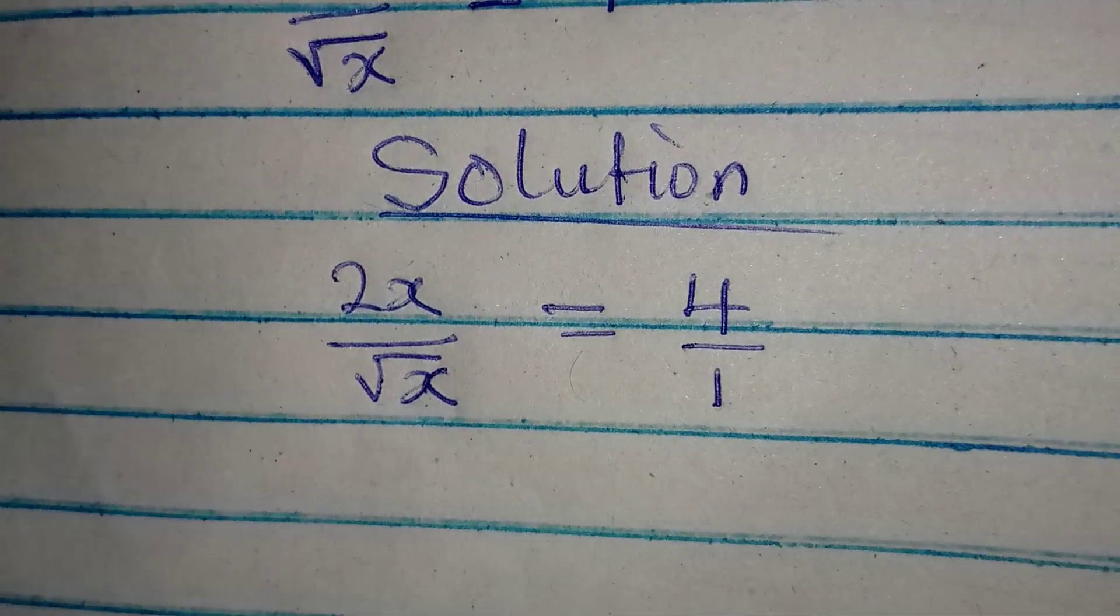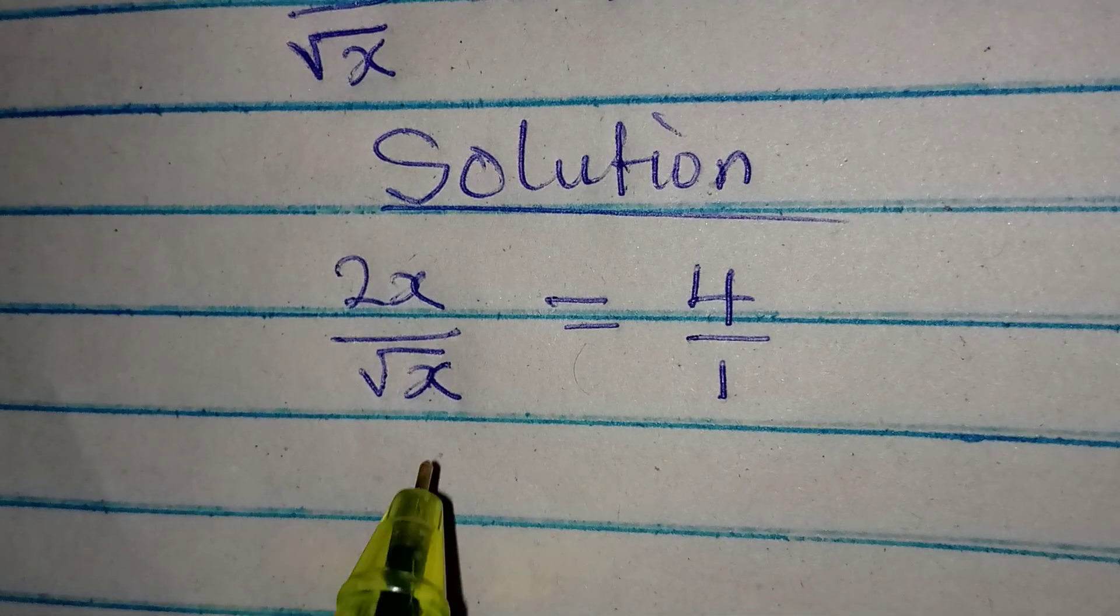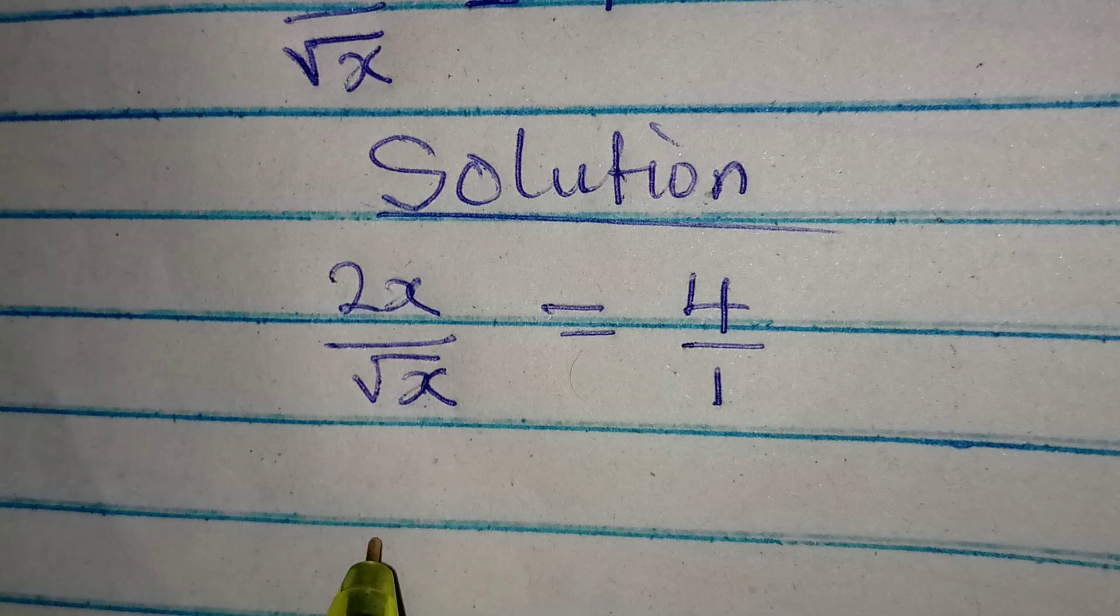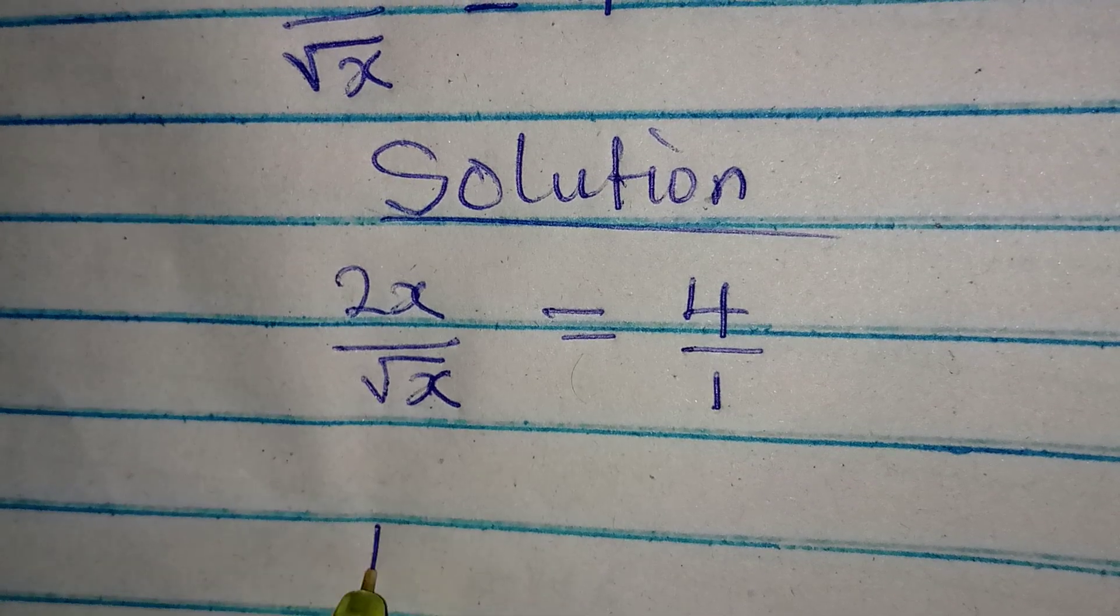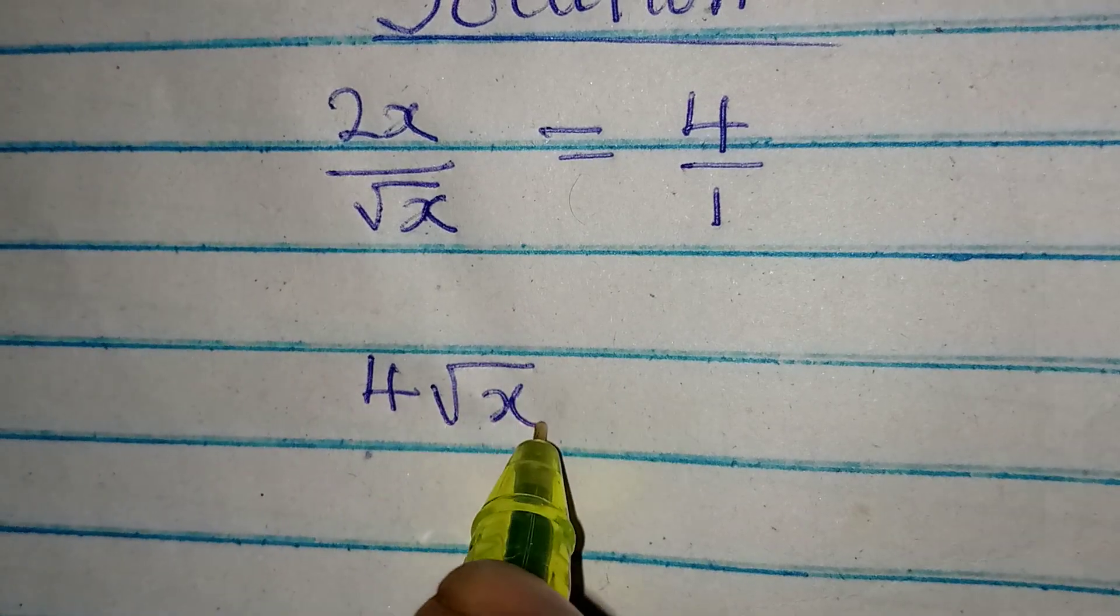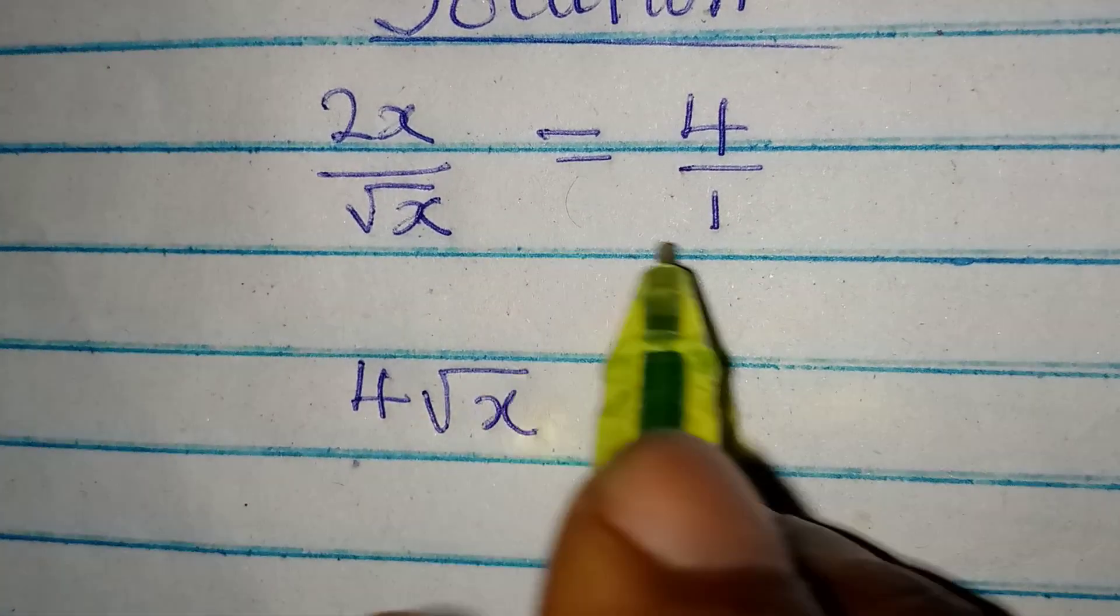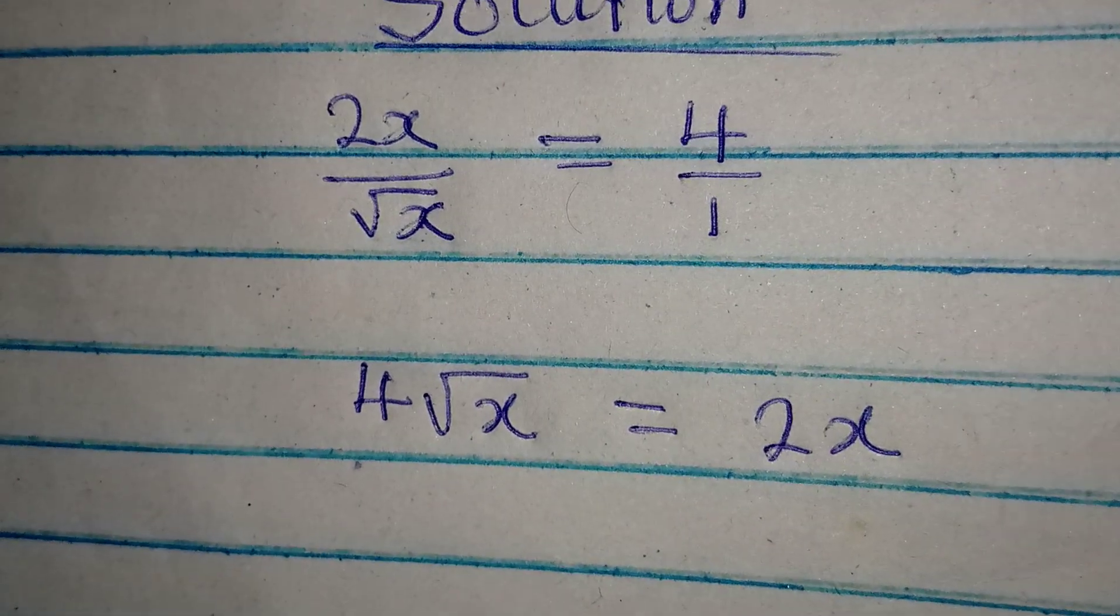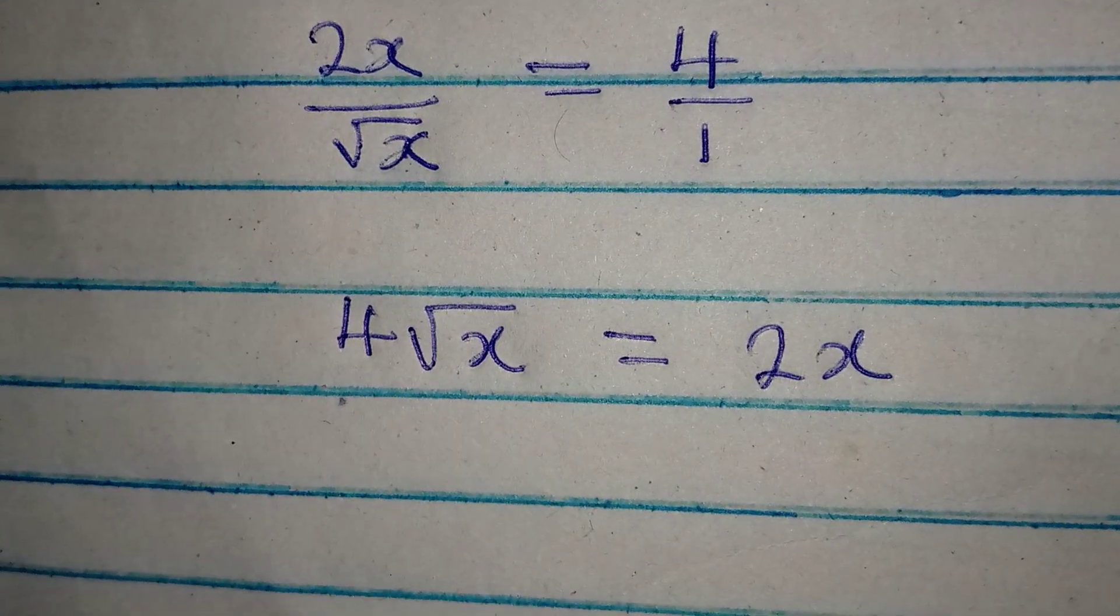So we have square root of x times 4, which gives us 4 square root of x being equal to 2 times x times 1, and that is 2x. This way we can just divide both sides by 4.